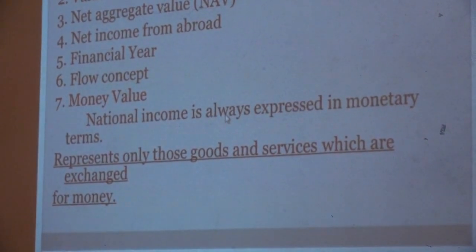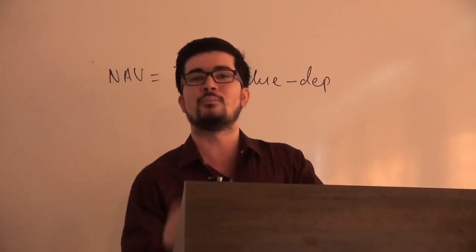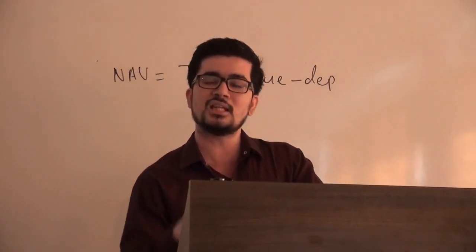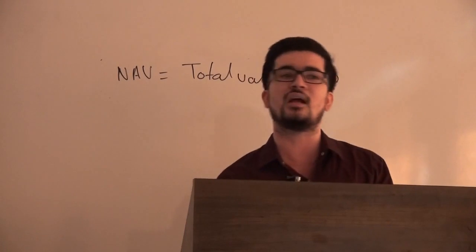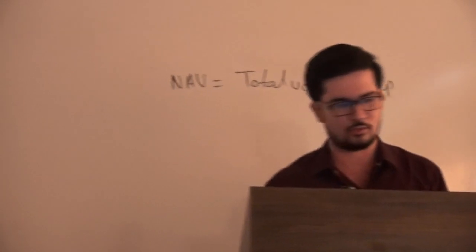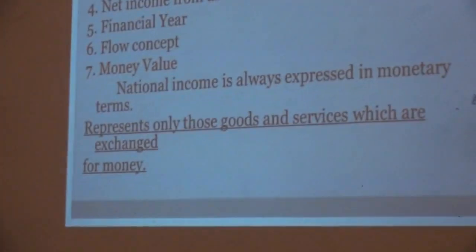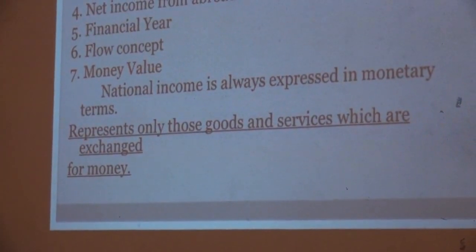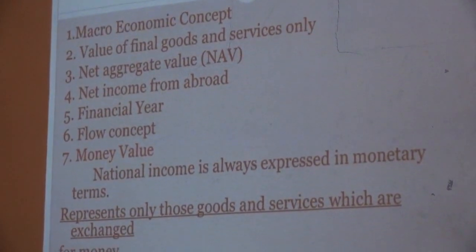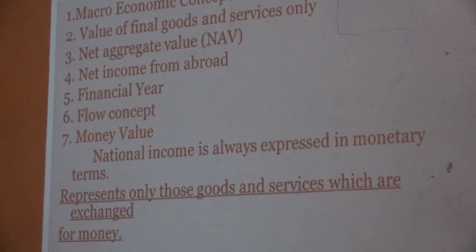The seventh feature is money value. We cannot count commodities in numbers — we cannot say we produced 1,000 plants or 1 million mobiles. To express the value of a particular commodity, we take it in terms of money. That is why it is called money value. In summary, the seven features of national income are: macroeconomic concept, value of final goods and services, net aggregate value, net income from abroad, financial year, flow concept, and money value.